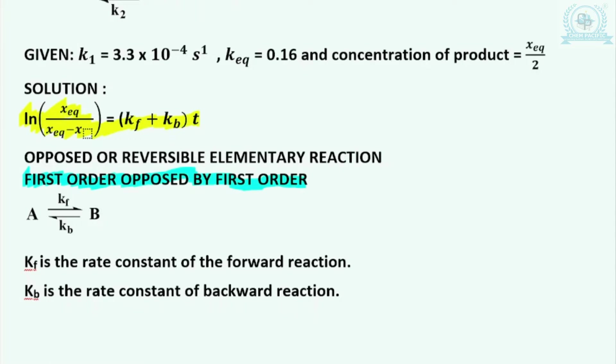They have given you cis form and trans form. Taking these in general as A and P, in this reaction kf is the rate constant of the forward reaction and kb is the rate constant of the backward reaction.